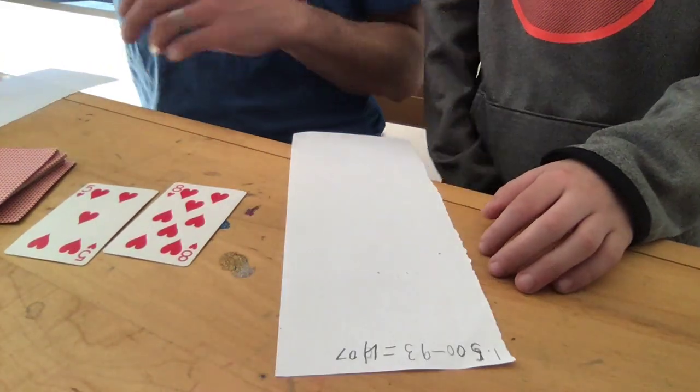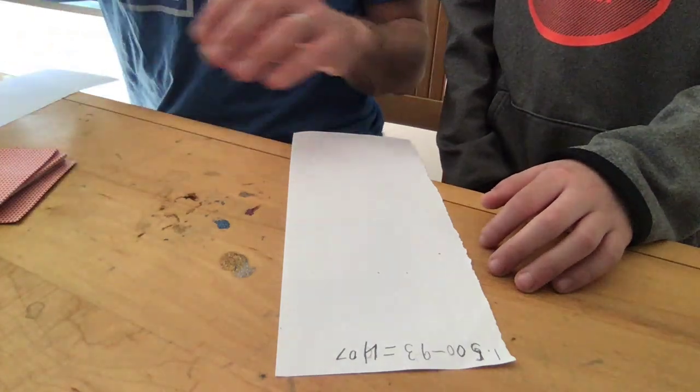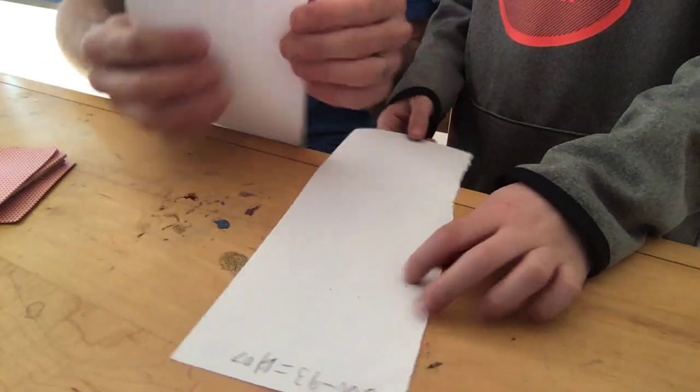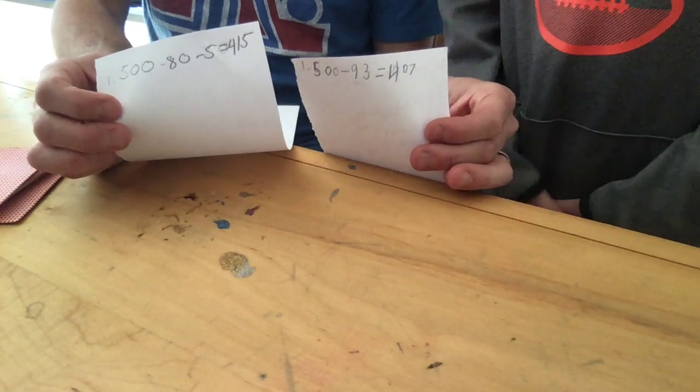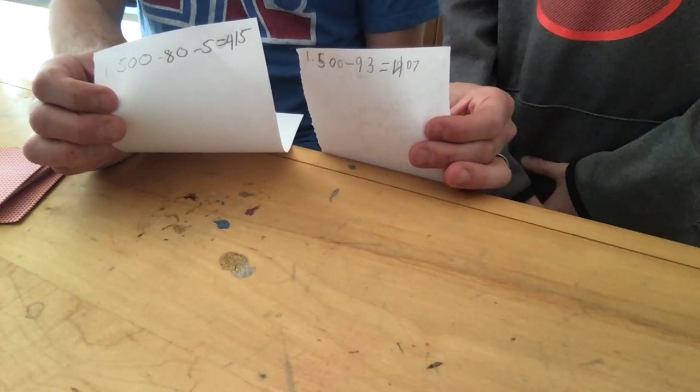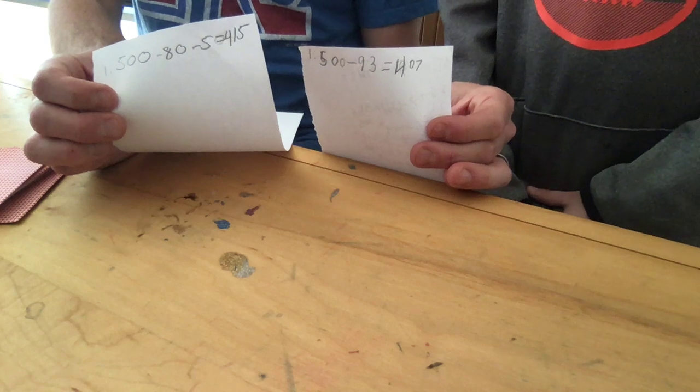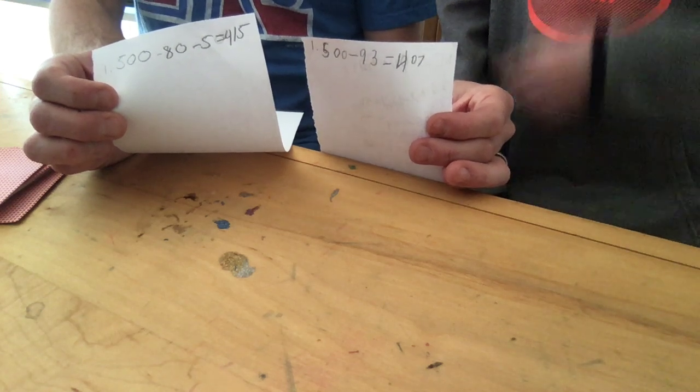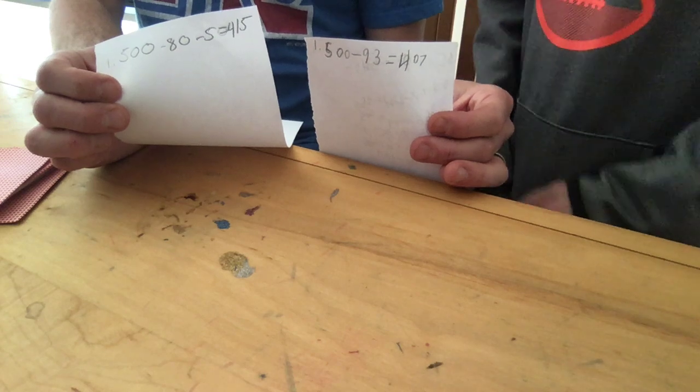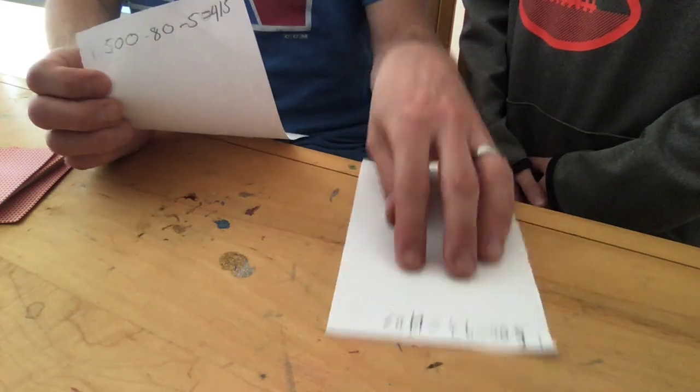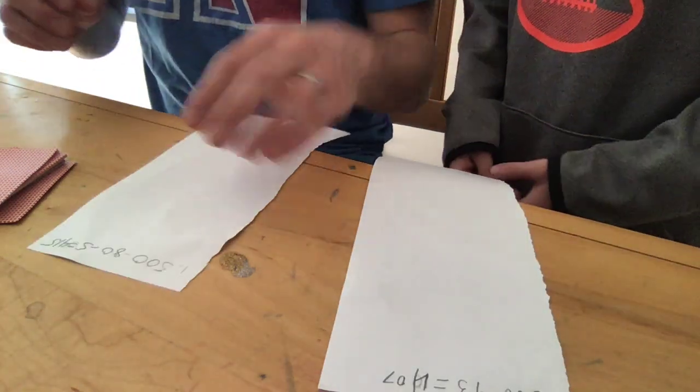If we were looking really quickly after one round, who's closest to zero? I have 415. He has 407. Who's closest to zero? That would be me. That would be you. How much closer are you than I am? You have, I have 415. Then I would be eight closer. You are eight closer.